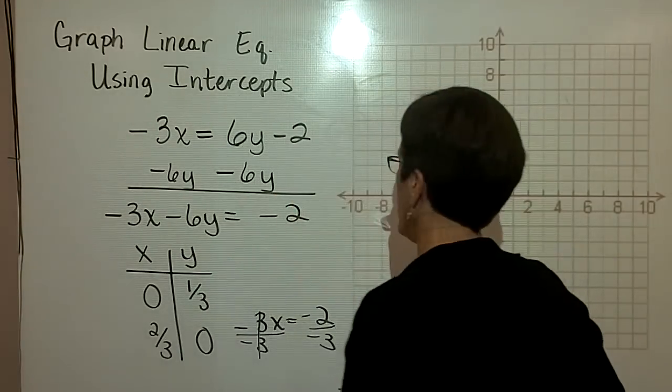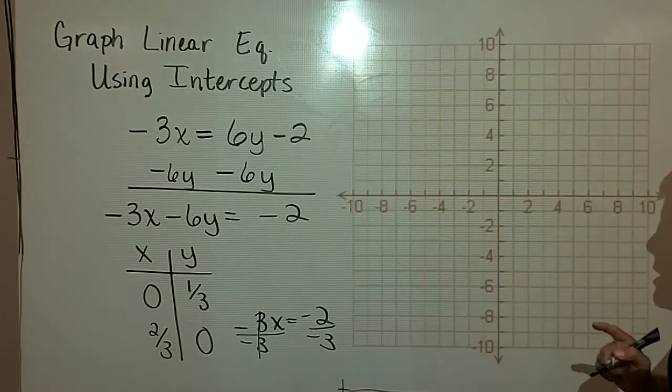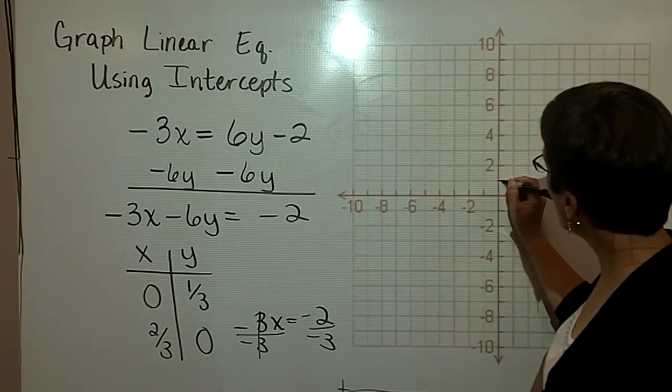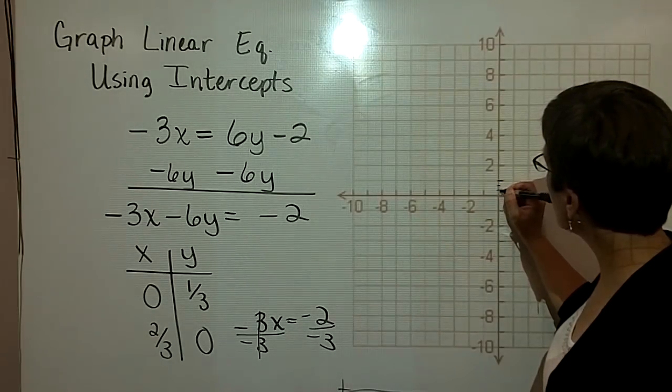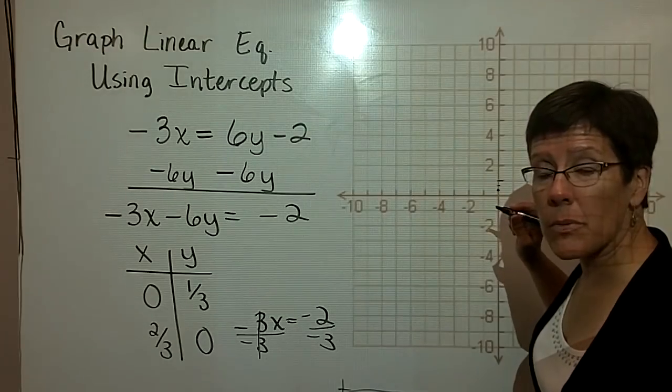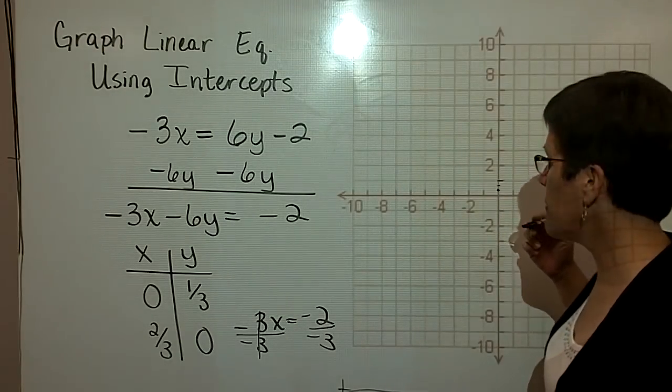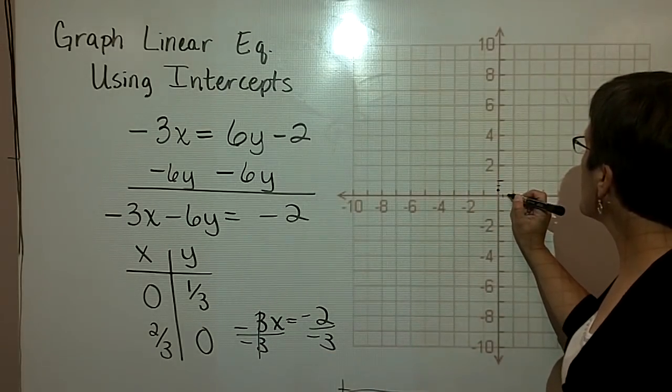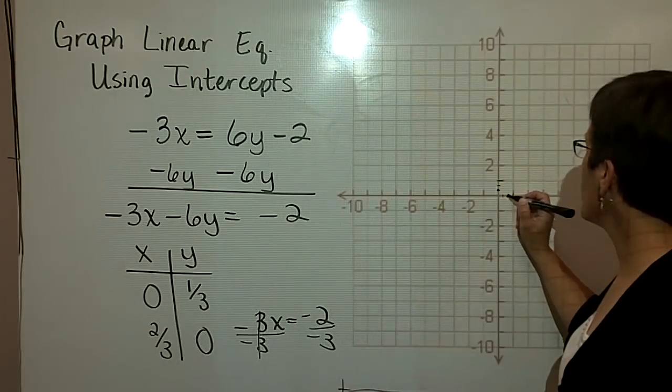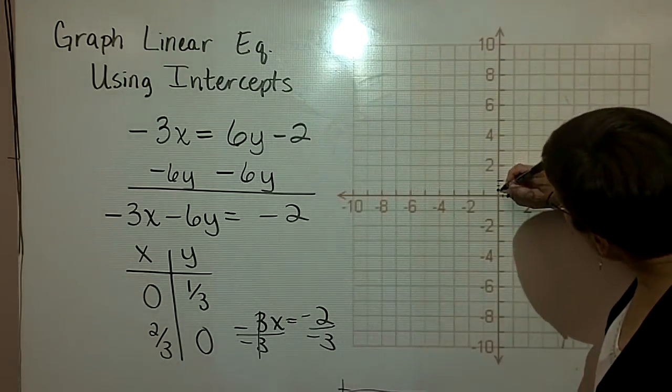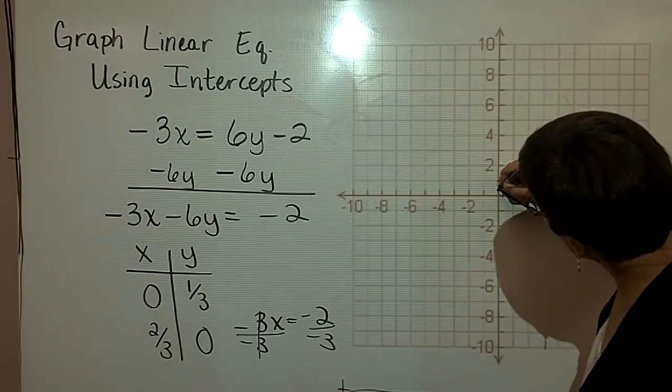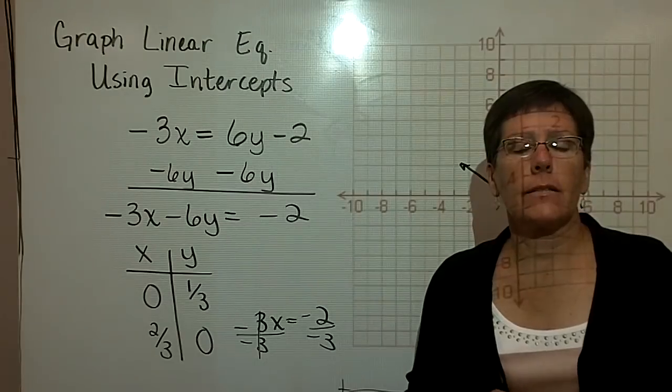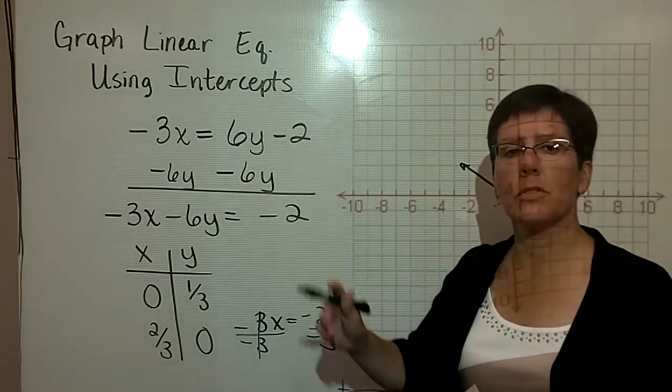I'll go ahead and graph that on this rectangular coordinate system. Really tough to do because I'm looking at thirds. x is 0, y is 1 third. Here's 1, so I'd probably do something like this. I would not use intercepts for this problem typically, but I wanted to demonstrate that it can be done for any problem. x is 2 thirds. So if this is 1, then here's 1 third, here's 2 thirds. x is 2 thirds, y is 0. Boy, is that tough. So not a good method for this particular problem. It would be much better to choose values for x that are fairly large or multiples of 3 and multiples of 6.